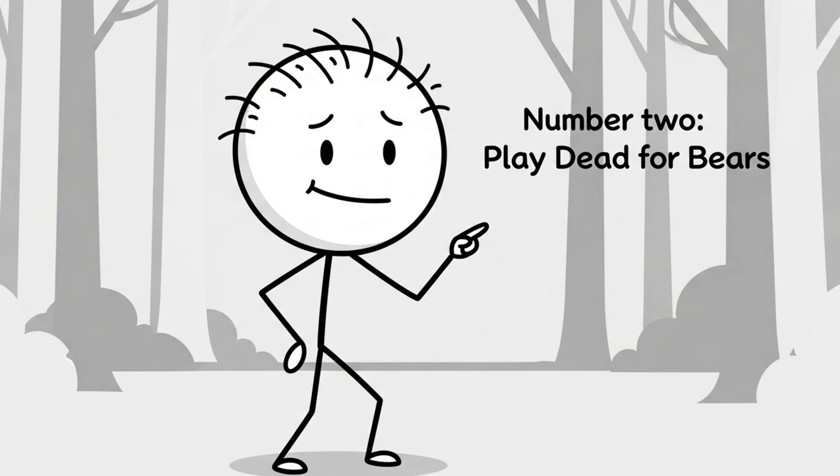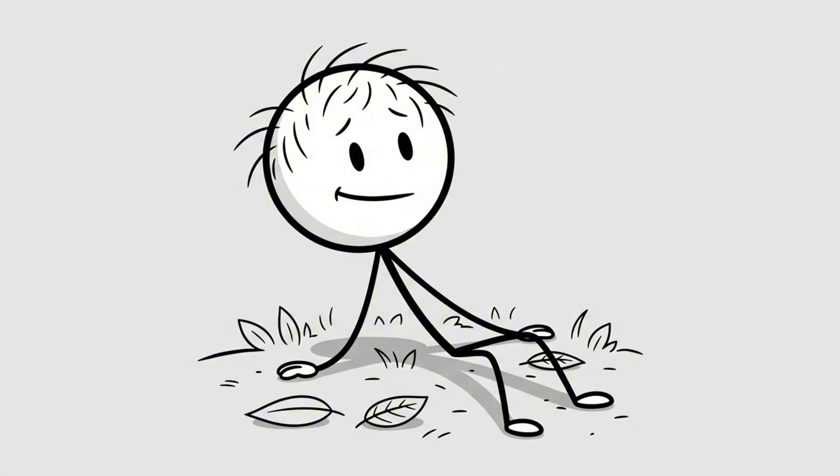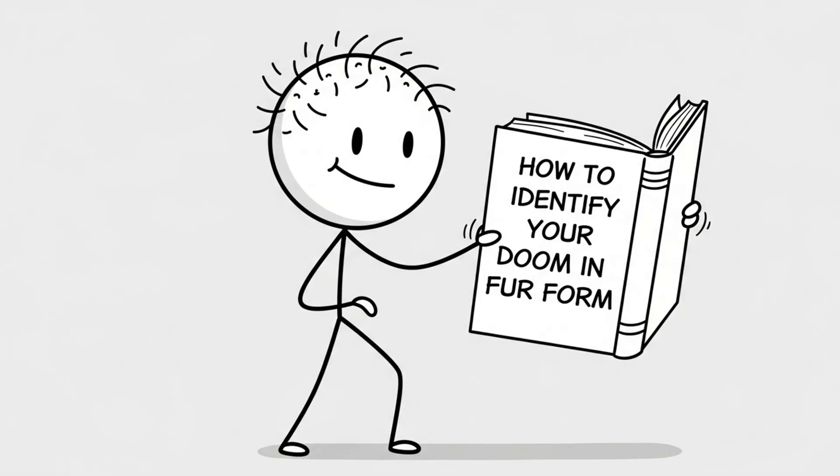Number 2. Play dead for bears. You see a bear. It sees you. You immediately fall to the ground and go limp like a fainting goat in yoga pants. Smart, right? That depends entirely on the bear. And sadly, most people don't carry a field guide titled How to Identify Your Doom in Fur Form.